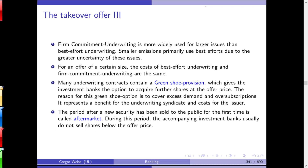Firm commitment underwriting is more widely used for larger issues than best effort underwriting. Smaller issues primarily use best efforts due to greater uncertainty. If you are a small company, investment banks will not go all-in with a firm commitment. If you are the hottest IPO of the decade — like Facebook — investment banks will fight for your mandate and offer a firm commitment.